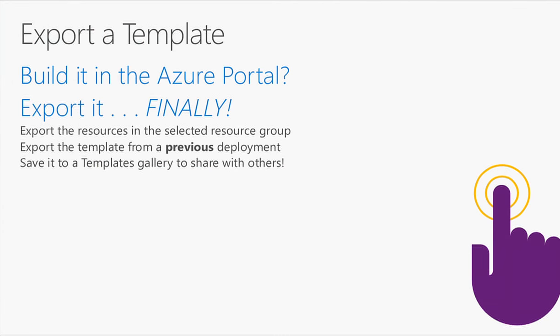One of the biggest things in the past has been that people would provision resources in the Azure portal and want to save them, but couldn't. About a month ago, they added the ability to export from the Azure portal. You can export a particular resource group or a previous deployment. You can save exported templates into a template gallery in the portal and share them with colleagues, applying permissions as well.